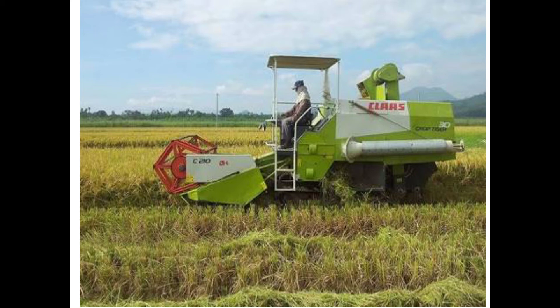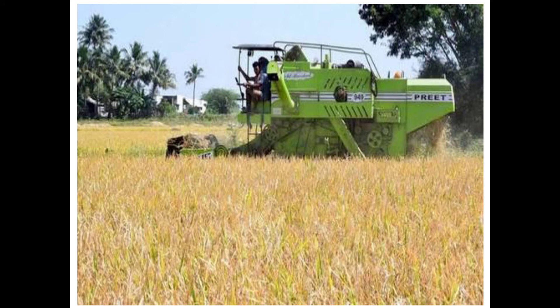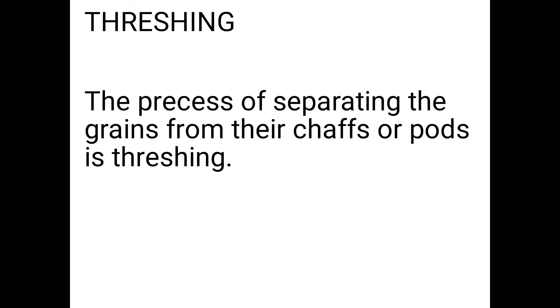In threshing, the grains are separated from the husk. We use this method to remove the seed from the plant. Threshing is the process of separating grains from the chaff and parts of the plant, separating the seed or fruit from the rest of the plant.